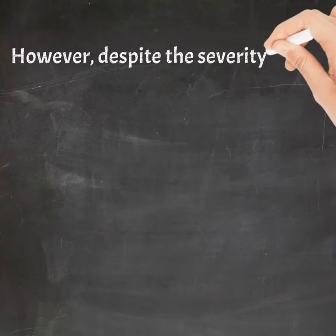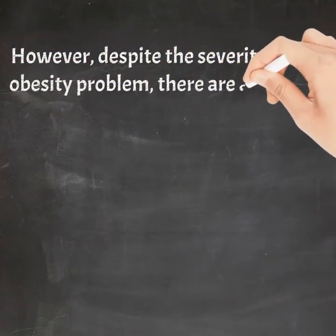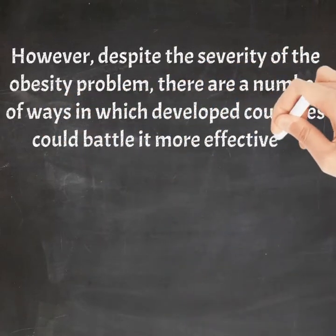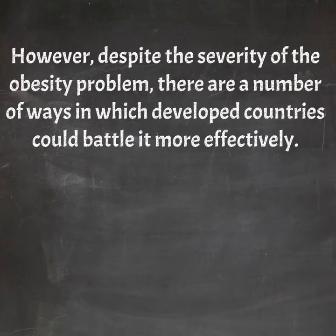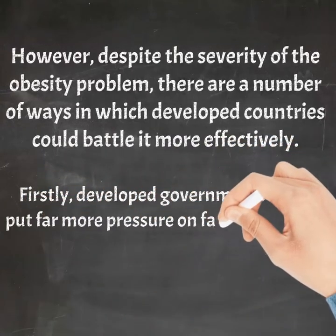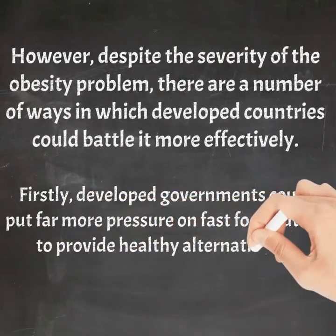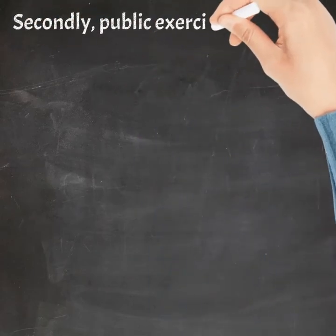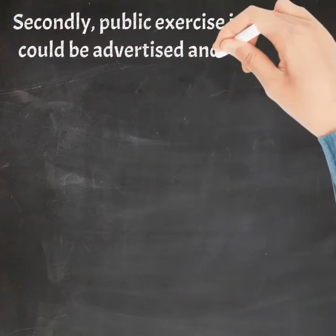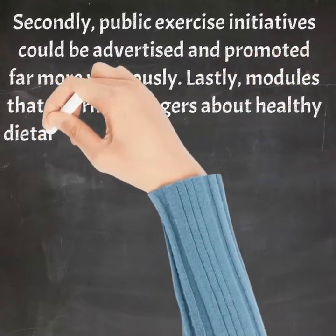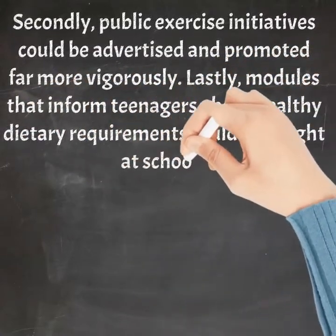However, despite the severity of the obesity problem, there are a number of ways in which developed countries could battle it more effectively. Firstly, developed governments could put far more pressure on fast food outlets to provide healthy alternatives to hamburgers, french fries and soft drinks. Secondly, public exercise initiatives could be advertised and promoted far more vigorously. Lastly, modules that inform teenagers about healthy dietary requirements could be taught at schools.